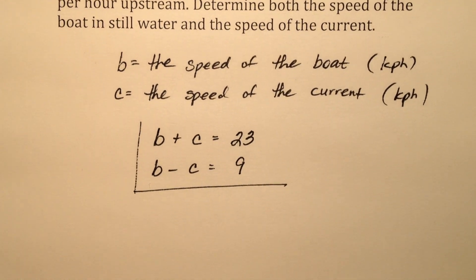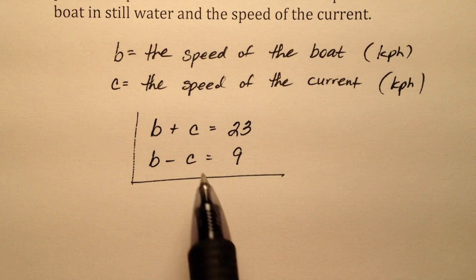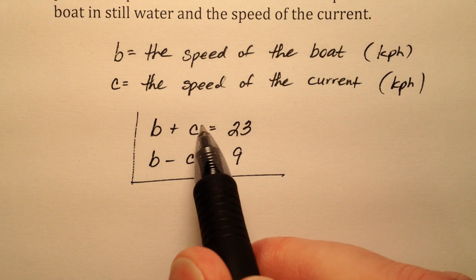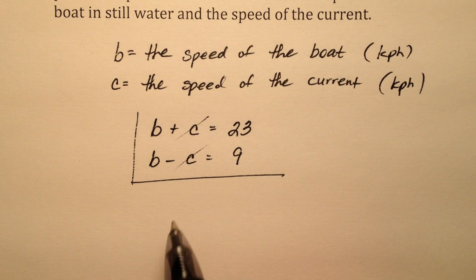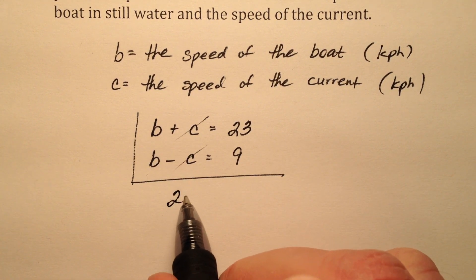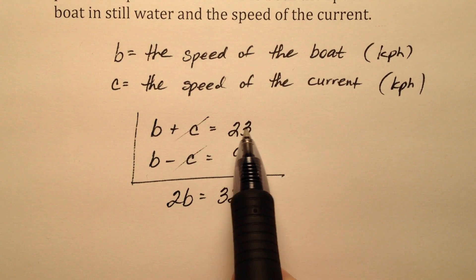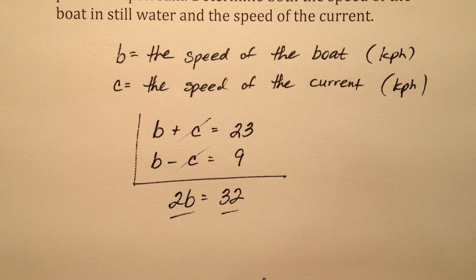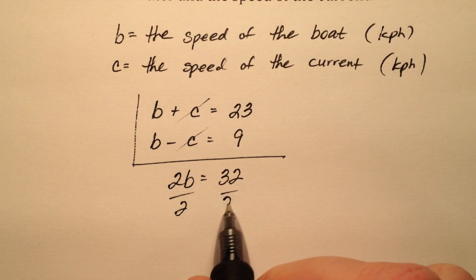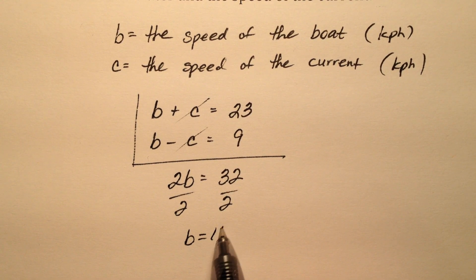When I see this system, it looks perfect for elimination. If I add these two equations together, my values of c would cancel, and I would have b plus b, which is 2b equals 32, when I do 23 plus 9. When I divide both sides by 2, b equals 16.